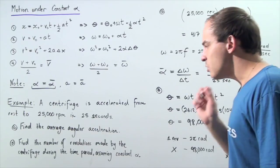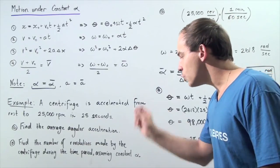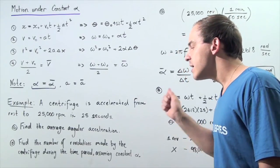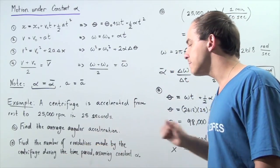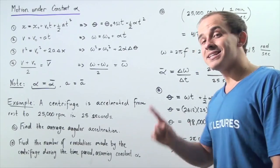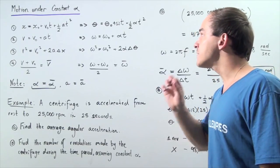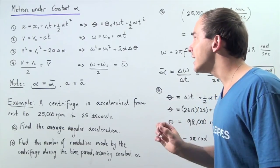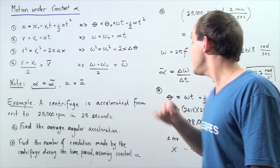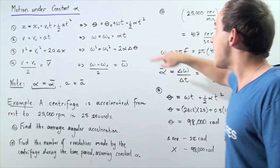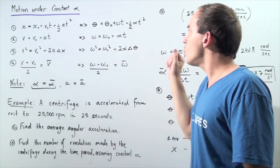Now we want to calculate the number of revolutions made by the centrifuge during our time period. To calculate that, we must first find the final angle measure in radians using the first kinematics equation.